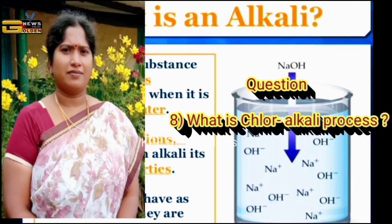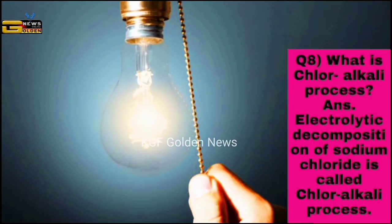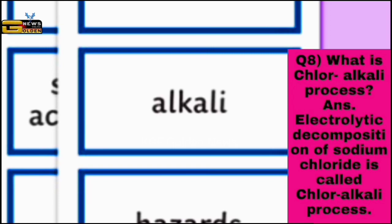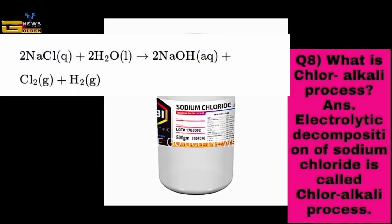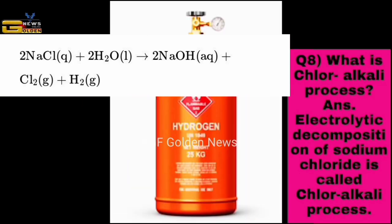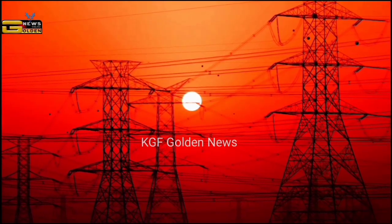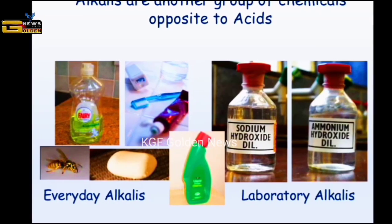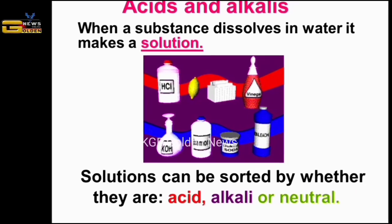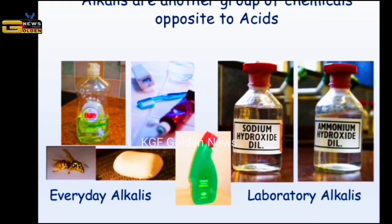Question number eight: what is chloralkali process? The answer is, electrolytic decomposition of sodium chloride is called chloralkali process. Sodium chloride reacts with water to form sodium hydroxide, chlorine gas and hydrogen gas. When electricity is passed through an aqueous solution of sodium chloride, it decomposes to form sodium hydroxide. The process is called chloralkali process because of the products formed — 'chlor' for chlorine and 'alkali' for sodium hydroxide.